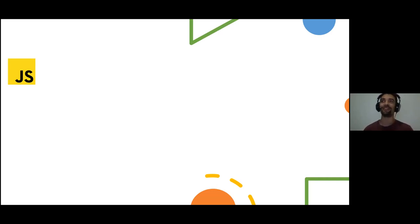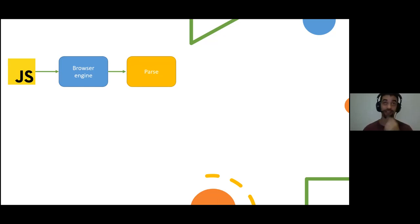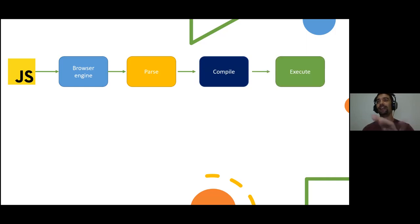Let's compare it to JavaScript, because they run together in the browser. When you have some JS code and it loads in your browser, it's picked up by the browser engine. The browser engine needs to first parse your code, then compile it, and then it's executed on your CPU. This is a simplified view — there are intermediary steps — but broadly, this is what happens when you load JavaScript files.